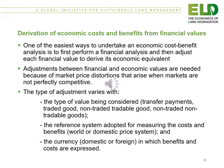One of the easiest ways to undertake an economic cost-benefit analysis is to first perform a financial analysis and then adjust each financial value to derive its economic equivalent. Adjustments between financial and economic values are needed because of market price distortions that arise when markets are not perfectly competitive. The type of adjustment varies with the type of value being considered — whether it's a transfer payment, a traded good, a non-tradable good, or a non-traded non-tradable good — and the currency, domestic or foreign, in which benefits and costs are expressed.